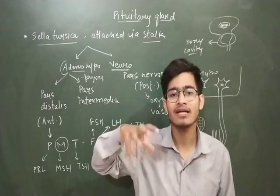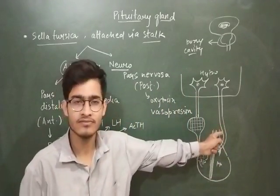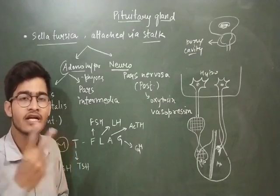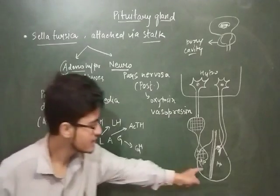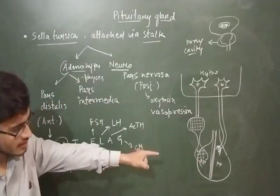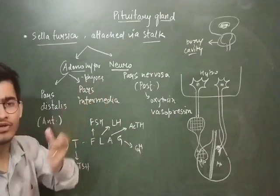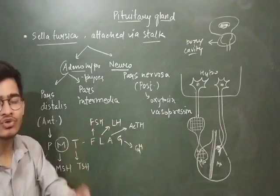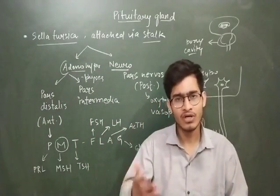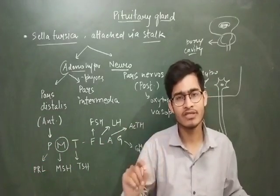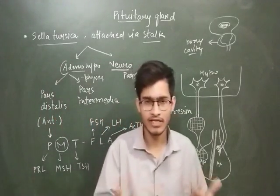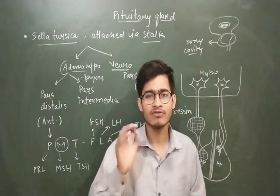To recap: the pituitary is present in the bony cavity called the sella turcica and connected to the hypothalamus via axonal connections. Adenohypophysis contains pars intermedia and pars distalis — pars distalis is the anterior pituitary, and both are fused in humans. Pars nervosa is the posterior pituitary and stores and secretes two important hormones. Now let me introduce you to nine or ten hormones using a very simple trick.